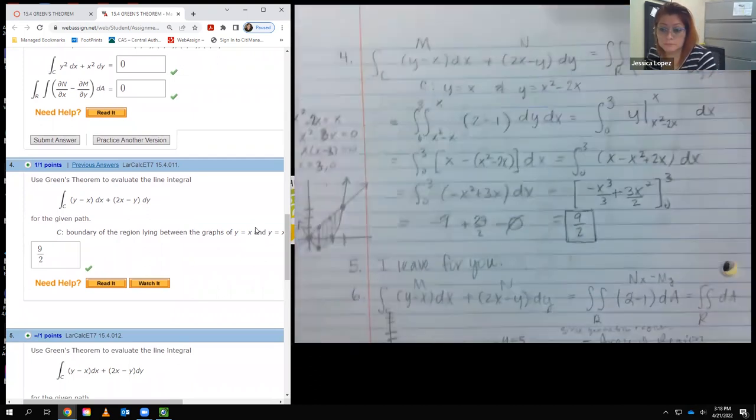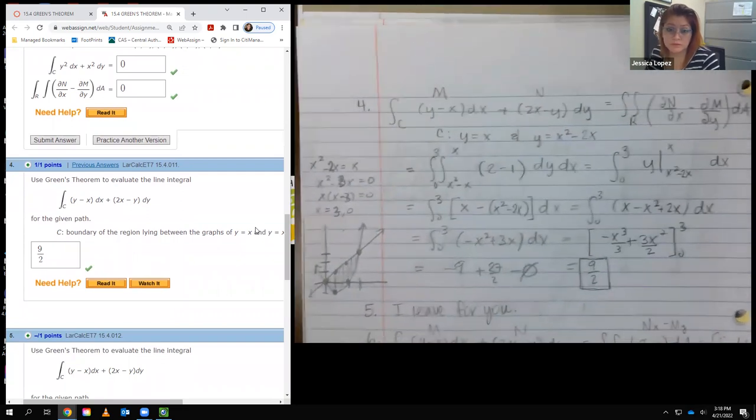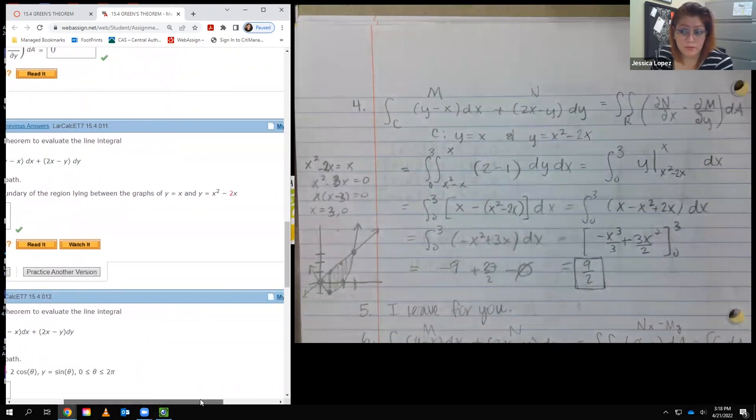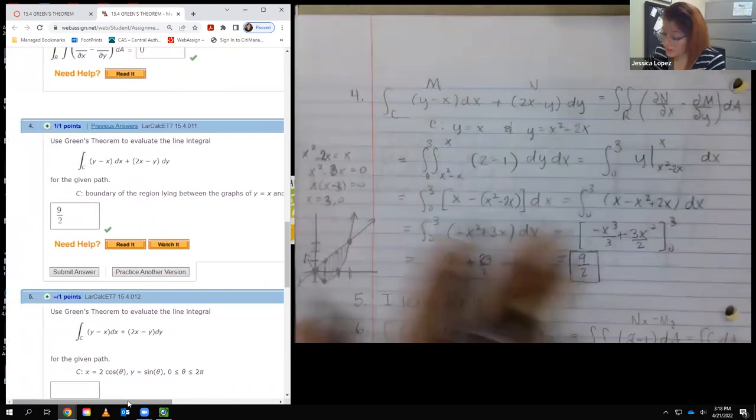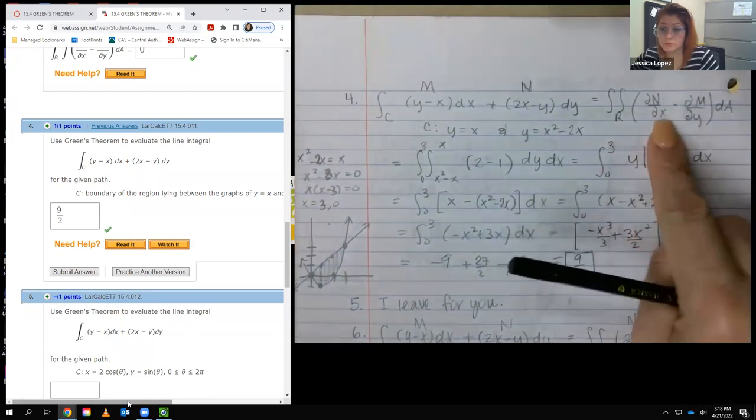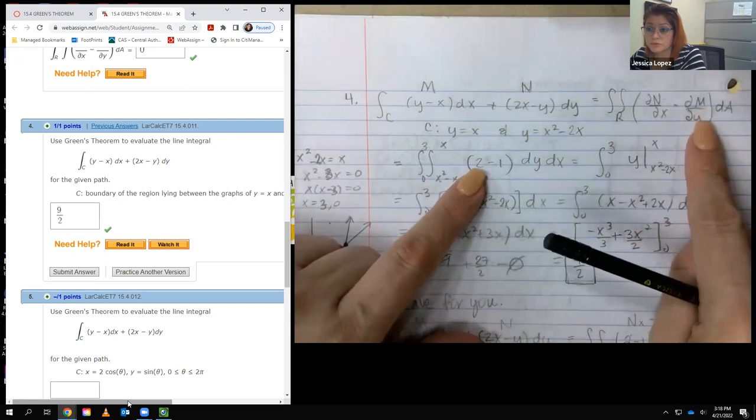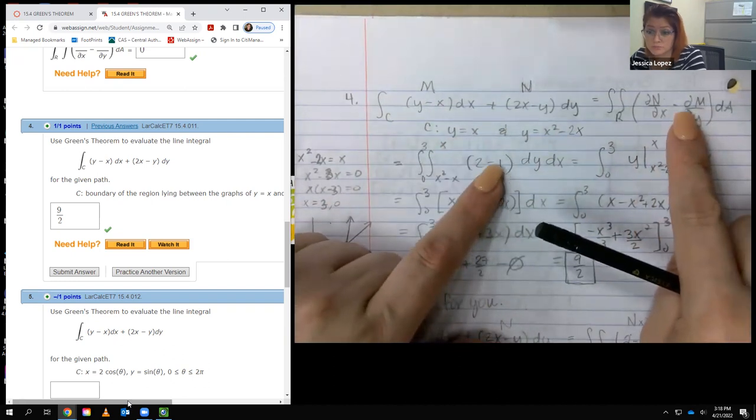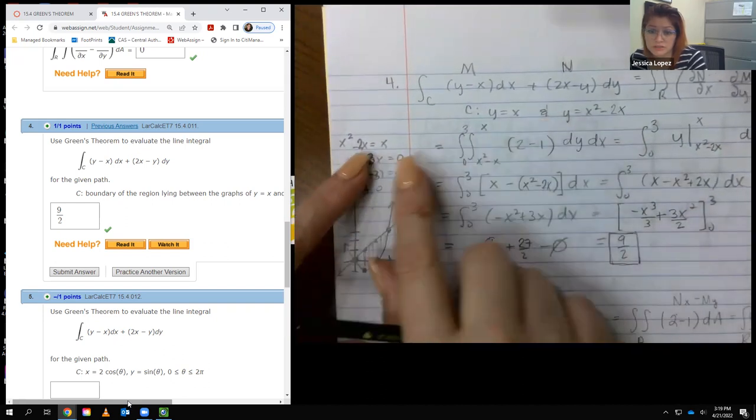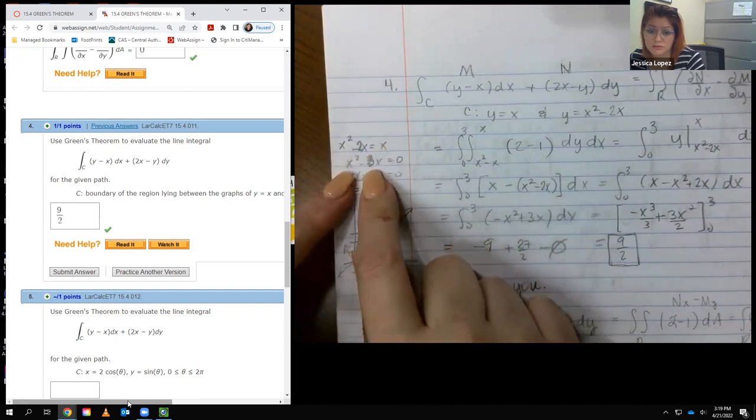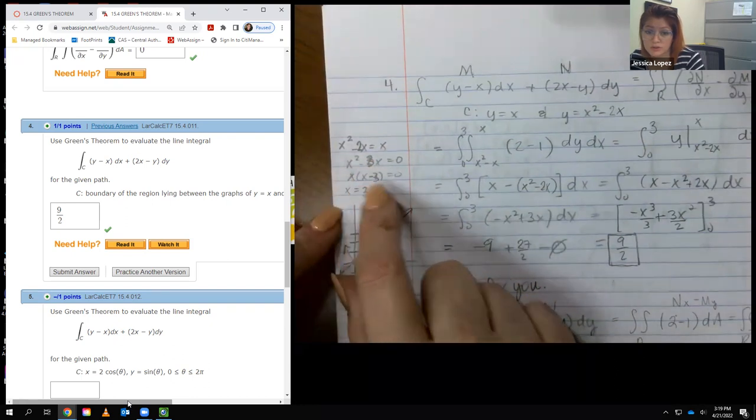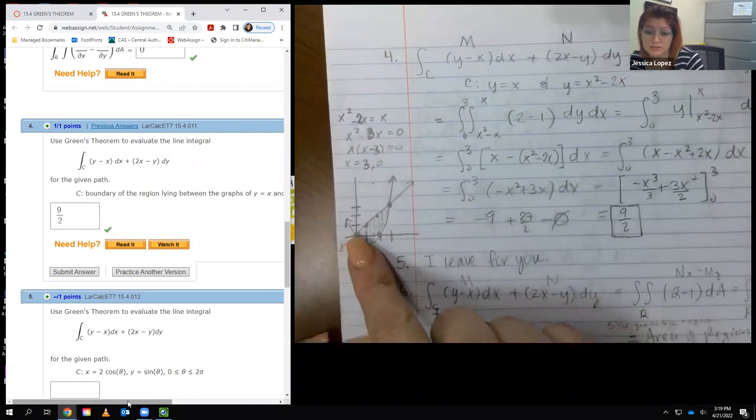So for number 4, they're asking us to do this integral with this path. So I wrote down my functions there. Again, don't forget that this is M and this is N. So in order for me to use this formula, the derivative of N with respect to X is 2, the derivative of M with respect to Y is 1, and then I subtracted those. So really I'm just taking the integral of 1. And I did do my graphs on the side. So I wanted to know where these two things intersected, so I made them equivalent to each other. Then I subtracted the X over, so I have X squared minus 3X equal to zero. I factored out the common X and so I set each one of these equal to zero. So I got zero and positive 3.